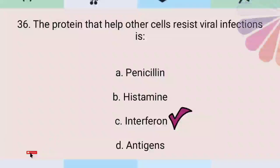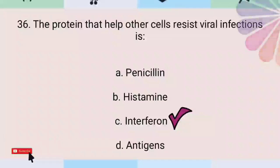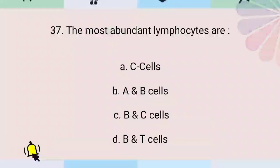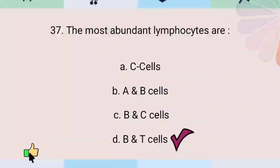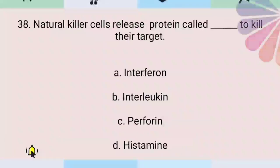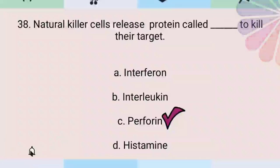The most abundant lymphocytes are B and T cells. Natural killer cells release a protein called perforin to kill their target.